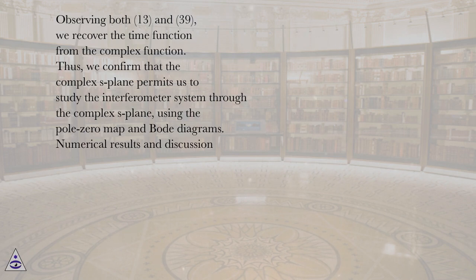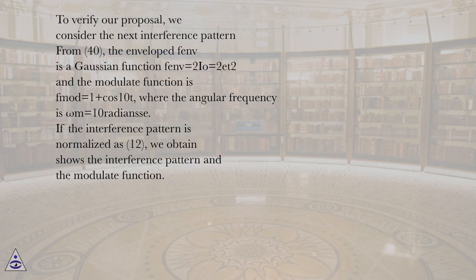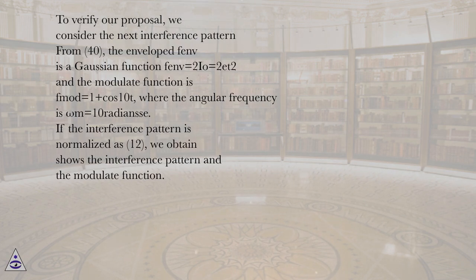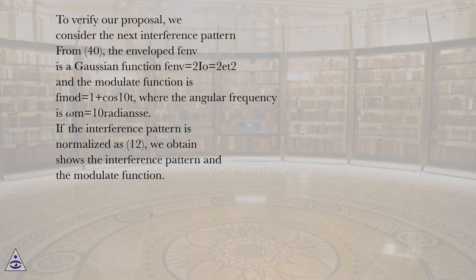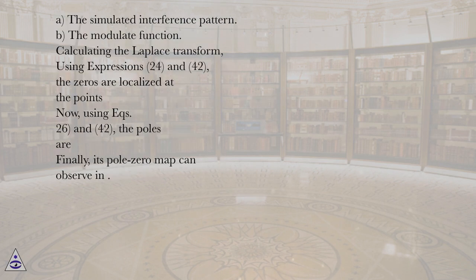In the numerical results and discussion section, to verify our proposal we consider the next interference pattern. From equation 40, the envelope function is a Gaussian function f_env equals 2I₀·e^(−2t²), and the modulate function is f_mod equals 1 plus cos(10t), where the angular frequency is ω_m equals 10 radians. If the interference pattern is normalized as equation 12, we obtain the result shown, which displays the interference pattern and the modulate function: (A) the simulated interference pattern, and (B) the modulate function.